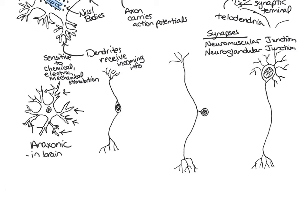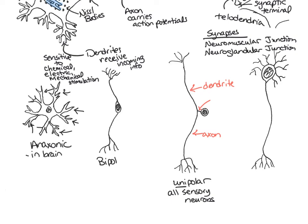The unipolar neuron has just one pole coming off the cell body. Extending from one side of that pole is the dendrite, and from the other side is the axon, so the dendrite and axon are continuous and the cell body lies off to one side. All sensory neurons of the peripheral nervous system are unipolar. The bipolar neuron has two processes — one dendrite from one end of the cell body and one axon from the other — and is found in the eye and in the ear.